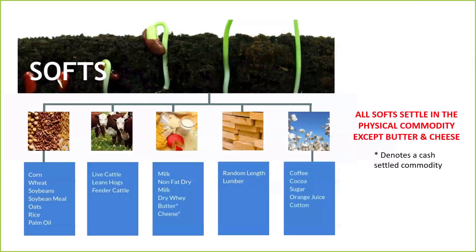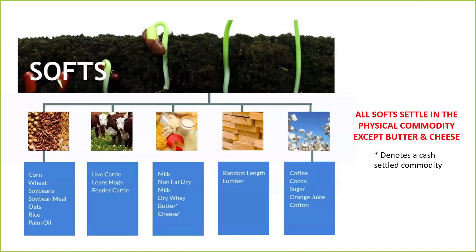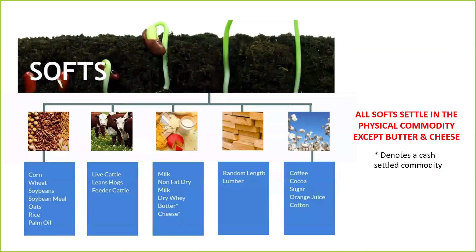Soft commodities are agricultural products — things that are grown or raised. Most soft commodities aren't that great for day trading. Personally, it's very rare that I day trade the softs. Now, to facilitate trade, all commodities share certain characteristics or standards. Each characteristic is designed to facilitate trade by appealing to as many buyers as possible and limiting negotiation to price alone.